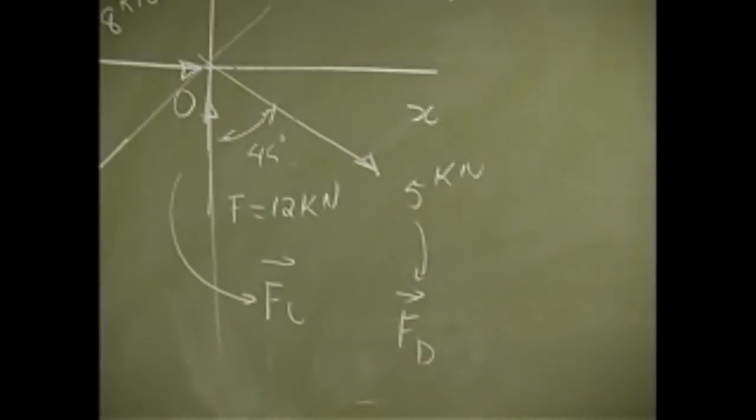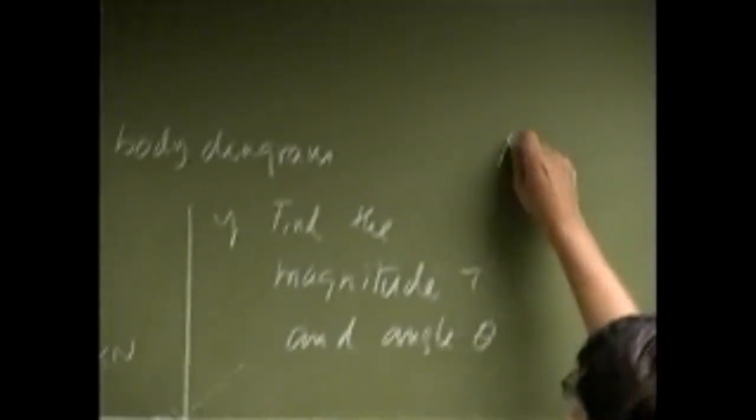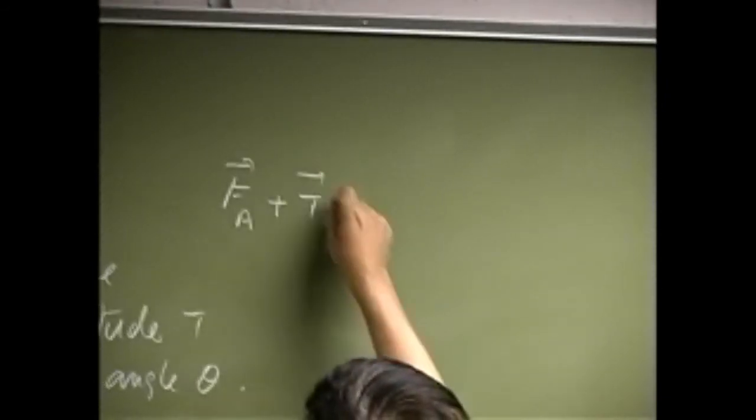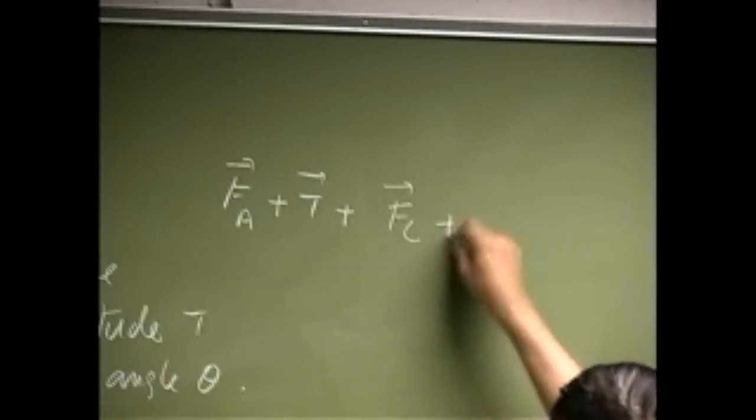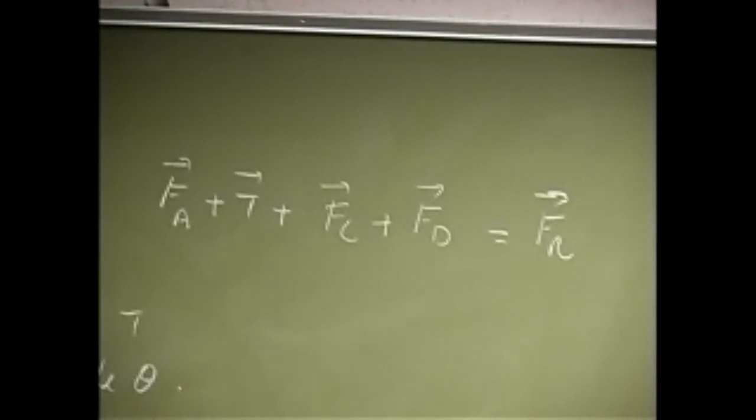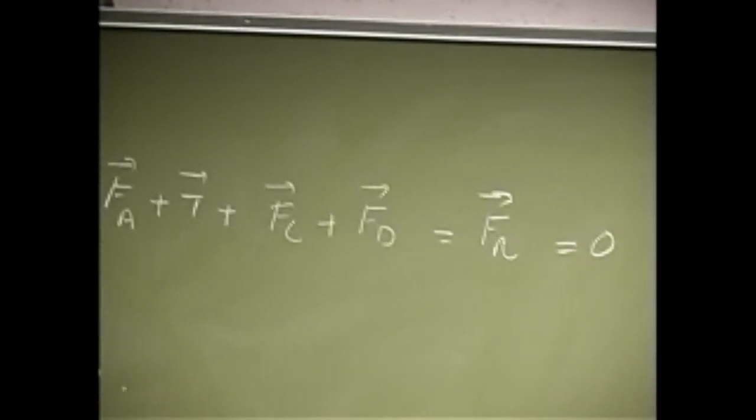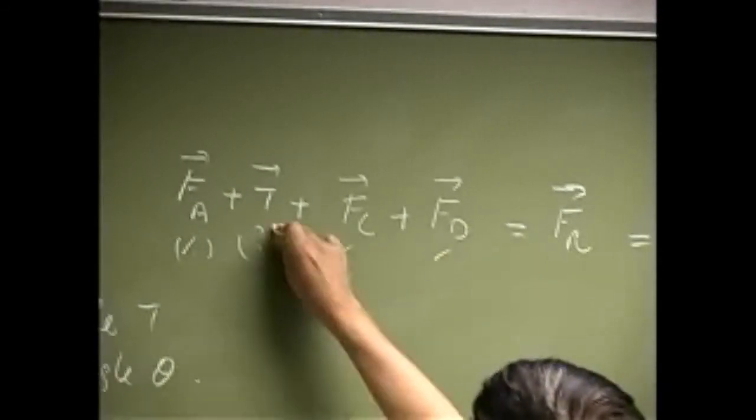So if we know that this whole system is in equilibrium then you have force F_A, then you have the force D retention which is T, then you have the force F_C, then you have the force F_D. They should all add up to the resultant force. And if the whole thing was in equilibrium then it should add up to 0. So all those four forces they should add up to 0. We know F_A, we know this, we know this, we know this, the only thing unknown is the T. So we should be able to find that force.